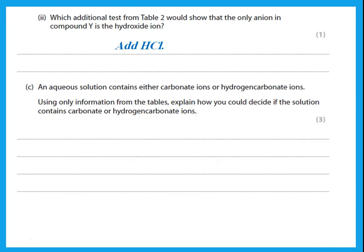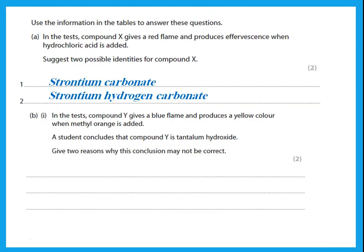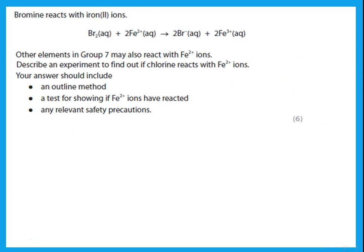To decide whether a solution contains carbonate or hydrogen carbonate ions, add magnesium chloride. Carbonate gives a white precipitate, while hydrogen carbonate gives no change. This is the only difference between them in the table.